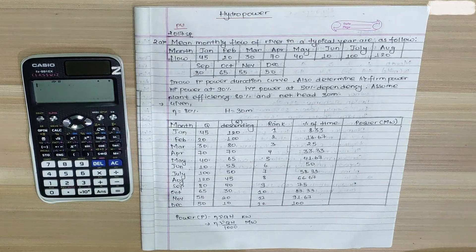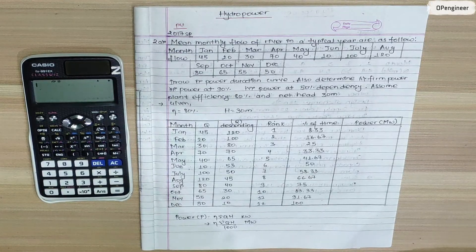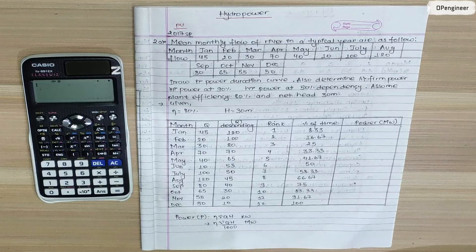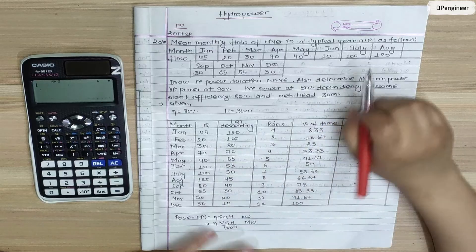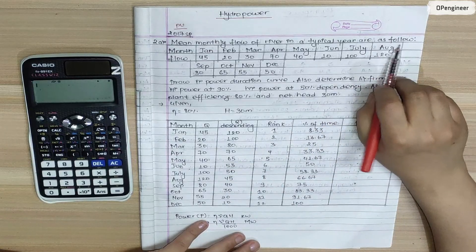Hello, I'm going to talk about hydropower engineering at Pokhara University. The question is: the mean monthly flow of a river in typical years are as follows.